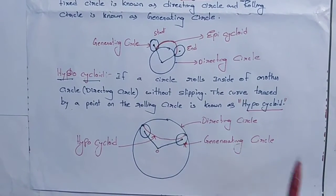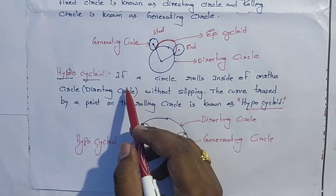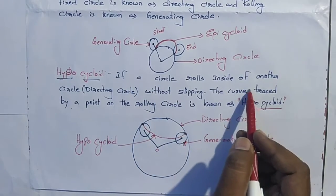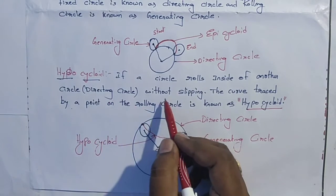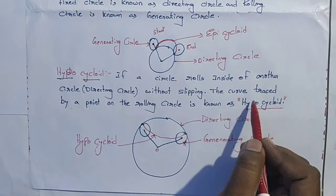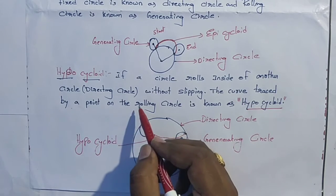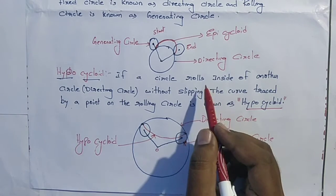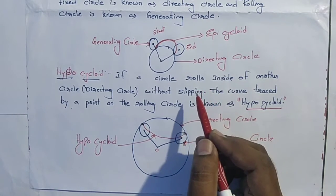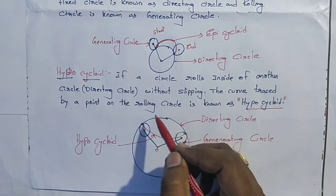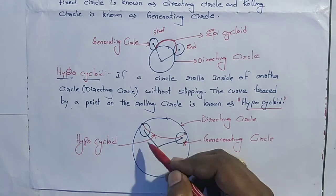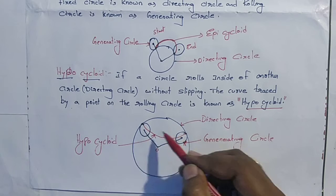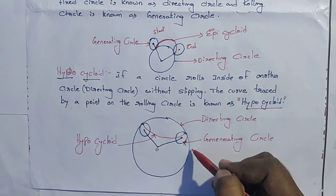Coming to hypocycloid: a hypocycloid is a curve generated when a circle rolls inside of another circle without slipping. The curve traced by a point on the rolling circle is known as a hypocycloid. It is similar to the epicycloid, but here the rotating circle rolls inside the other circle — the directing circle — rather than outside.